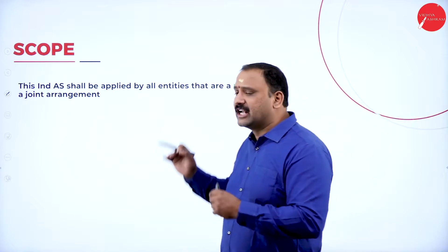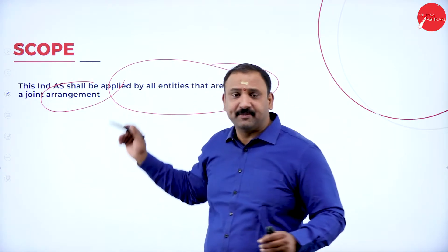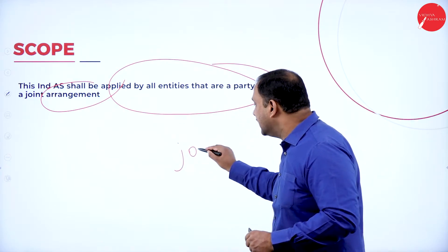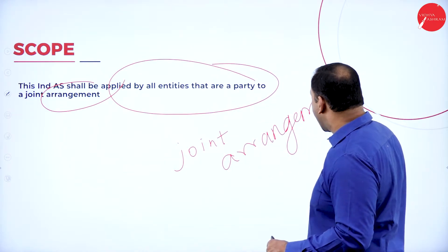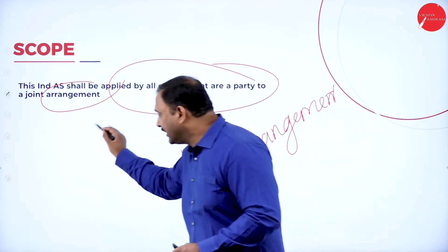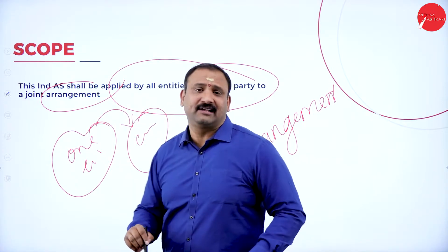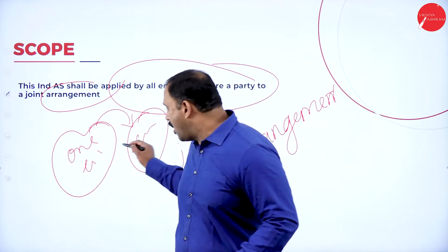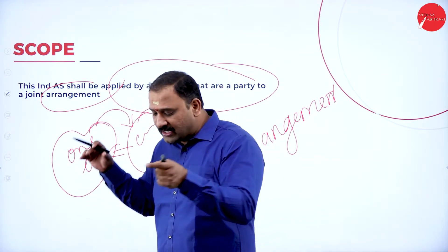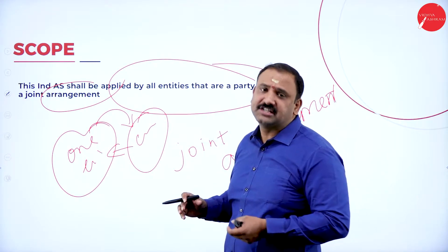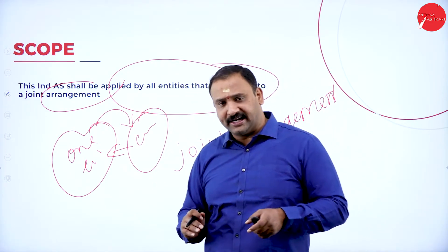The scope of Indian Accounting Standard 111 shall be applied to all entities that are a party to a joint arrangement. When we use the term joint arrangement, we are getting into a control factor — how two entities are jointly controlled, and what reporting standards apply. This standard will not be applied to a single organization or a single entity at any point.